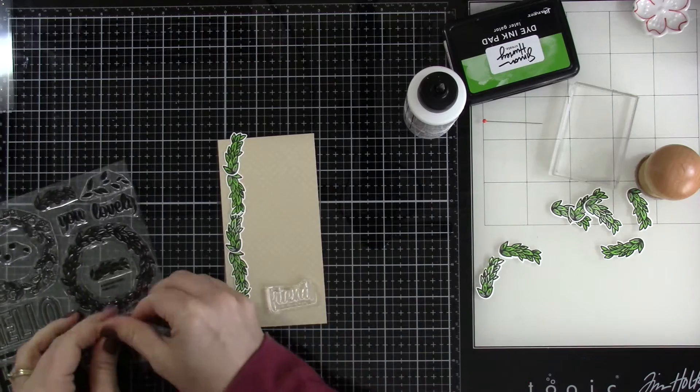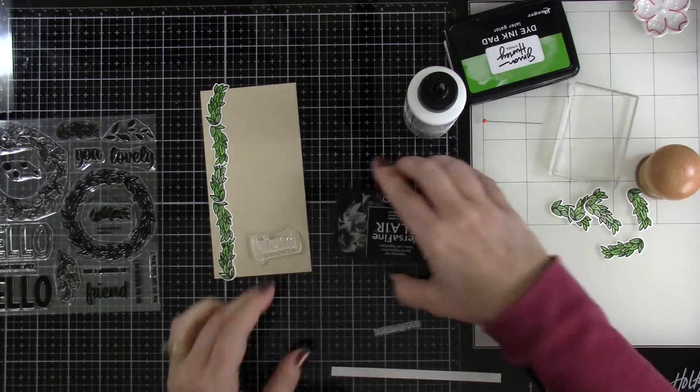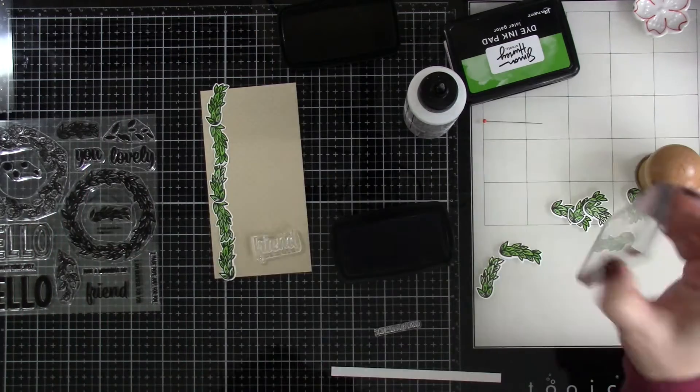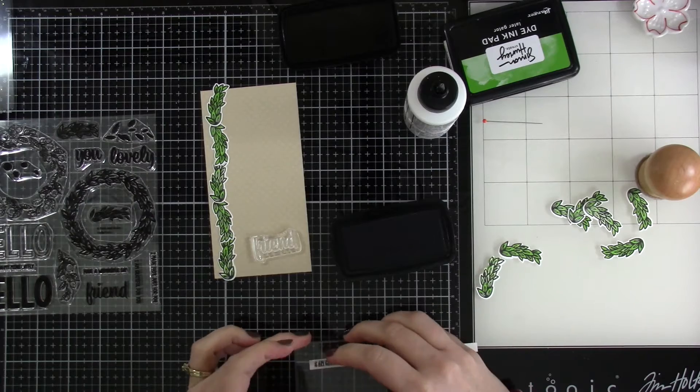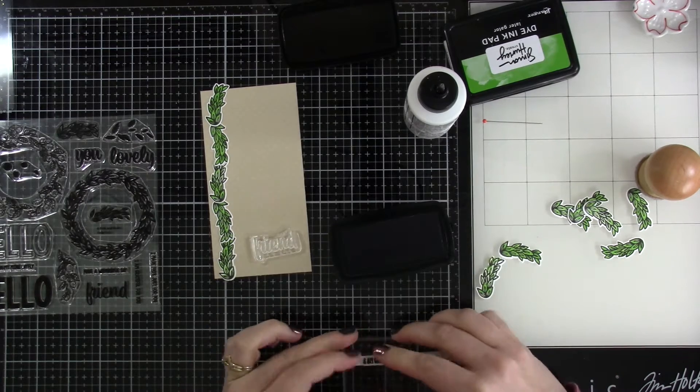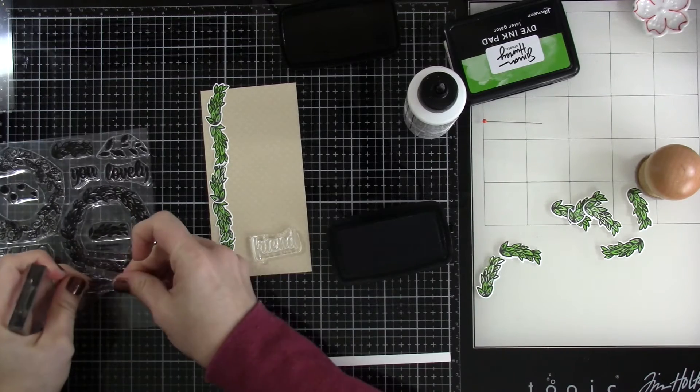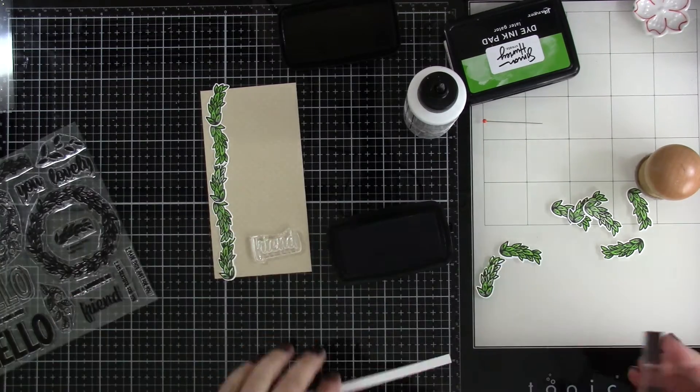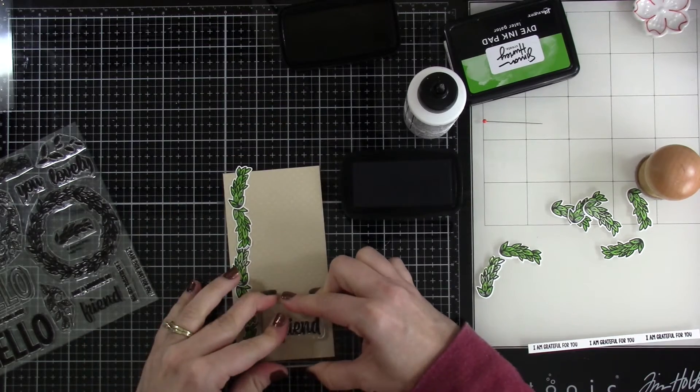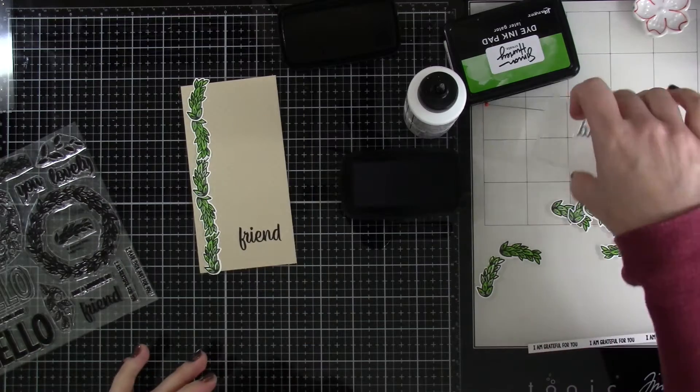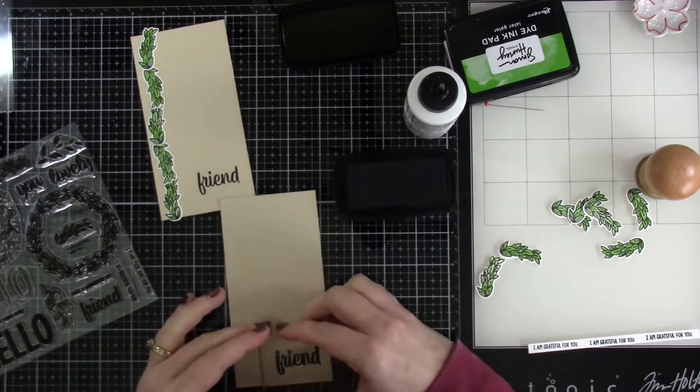I'm bringing in my sentiment now, which we're bringing in the friend sentiment, and then one of the other small sentiments. And I'm going to stamp this out using some VersaFine Clair Nocturne ink. It is a very crisp black ink. I'm stamping that several times on this piece of white cardstock that I have. It's just like a leftover piece that I had. And so I stamped that three times because I wasn't sure how many times I might want to use it on cards in the future. And it says, I am grateful for you.